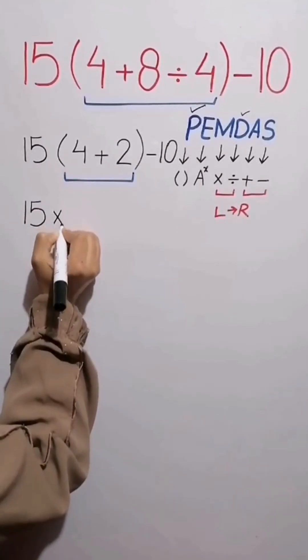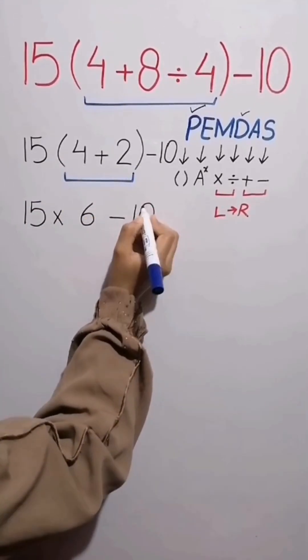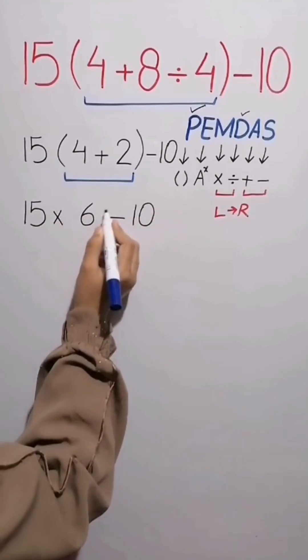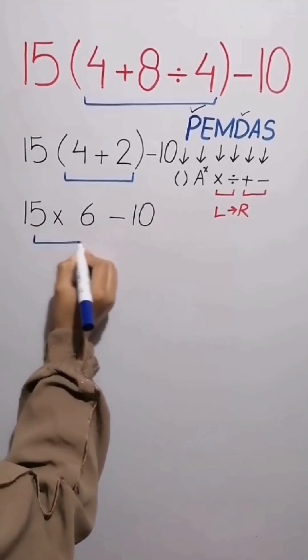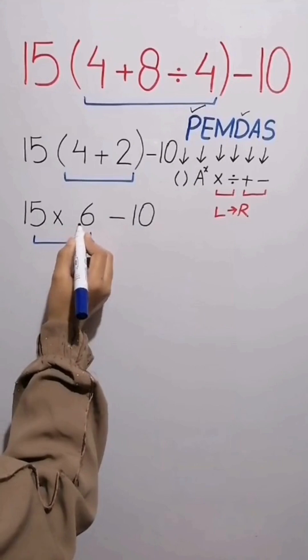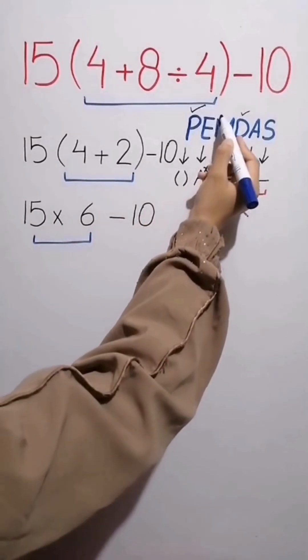15 times (4 plus 2 equals 6) minus 10. Now we have multiplication and subtraction. First we do the multiplication between 15 and 6 because multiplication comes before subtraction.